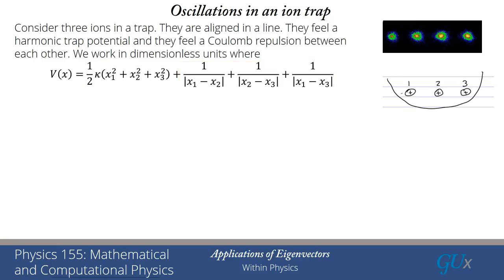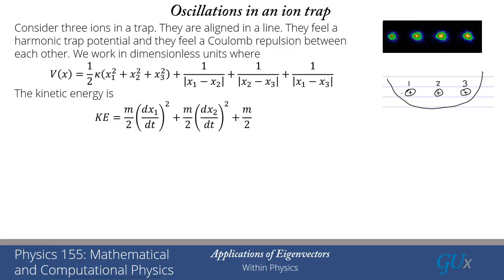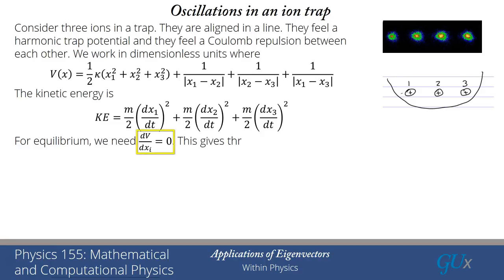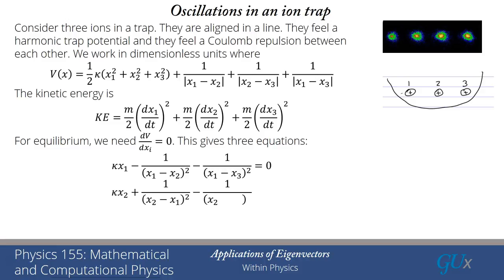Schematically, atoms one, two, and three are positively charged, sitting in a harmonic trap, and they feel some repulsion, so they'll be expanded from each other. The potential energy is just the harmonic trap potential energy plus the Coulomb repulsion between each of the different ions — those are the two parts of the potential energy given here. We're working in dimensionless units, so we just have a one on top of the second half. For equilibrium, we need the derivative of the potential energy to be zero for each of the different ions — this gives three equations.